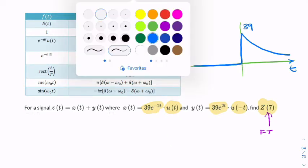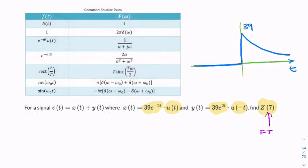Now, if we look at Y of t, slightly less obvious, but what we're doing is we're multiplying by a reversed unit step. So that means it's going to be one for negative time and zero for positive time.